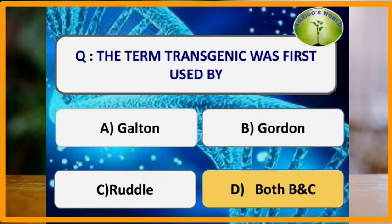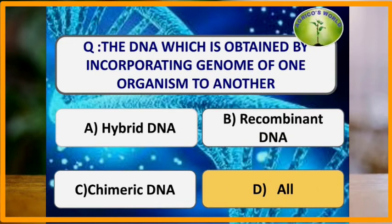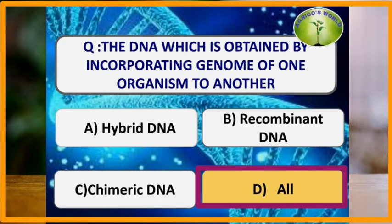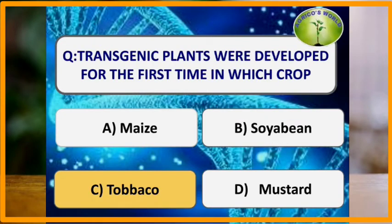The term transgenic was used by scientists Gordon and Ruddle. A transgenic is a genetically engineered organism or individual. The DNA obtained by incorporating the genome of one organism into another is known as hybrid DNA or recombinant DNA, and is also known as chimeric DNA.